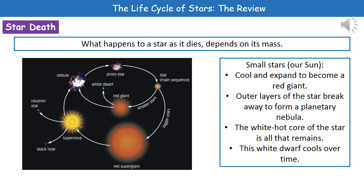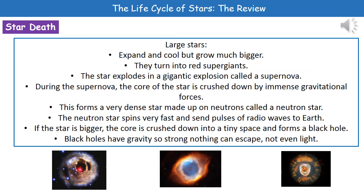Over time the white dwarf will cool down until eventually it just fades away to nothing. If we consider a large star, it does expand and cool but it's going to grow much bigger, turning into something called a red supergiant. What we then see is something completely different: the star explodes in a gigantic explosion called a supernova. During that supernova phase, the core of the star is crushed down by immense gravitational forces to form a very dense star made up of neutrons, called a neutron star.